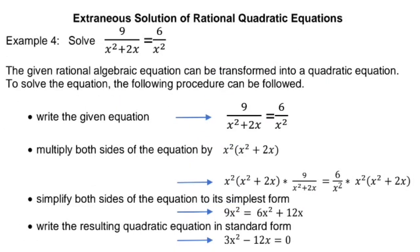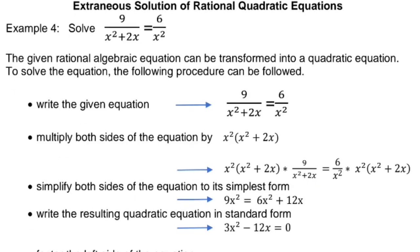Let's have the meaning of extraneous solution of a rational quadratic equation. Example 4: solve 9 over x squared plus 2x equals 6 over x squared. The given rational algebraic expression can be transformed into a quadratic equation. Write the given equation: 9 over x squared plus 2x equals 6 over x squared. The LCD will be the product of the denominators: x squared times the quantity of x squared plus 2x. Multiply this LCD to the equation on both sides.